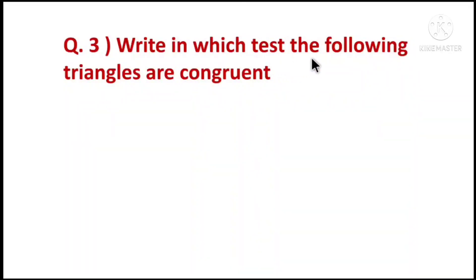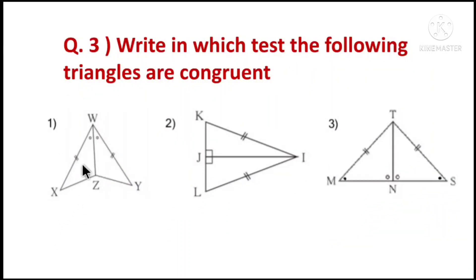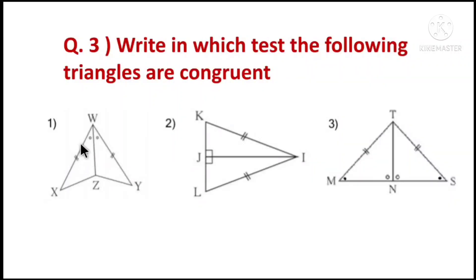Question 3: Write by which test the following triangles are congruent. WZ is a common side. This is Side-Angle-Side. The triangles are congruent by the SAS test.